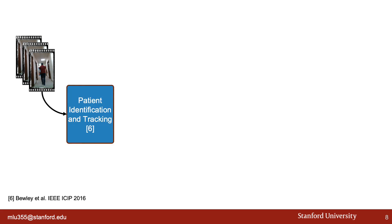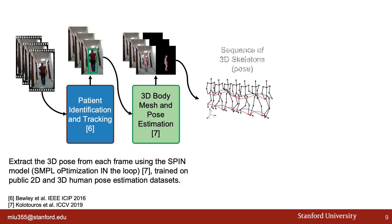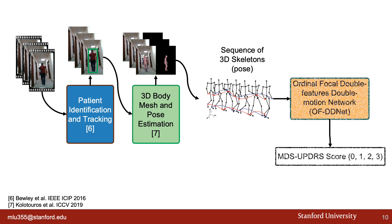This is a diagram of our entire pipeline. Our input data are video recordings of patient gait. First, we track and localize the patient in the video using the SORT algorithm. Next, we extract the 3D pose from each frame by feeding sequences of images and bounding boxes as input to SPIN, or Simple Optimization in the Loop, pre-trained on large datasets like Human3.6M and COCO. Finally, the sequence of skeletons are classified into the MDS-UPDRS scores using OFDDNet, our hybrid ordinal focal double feature double motion network.